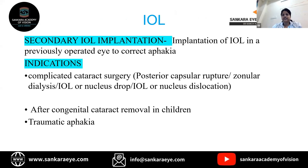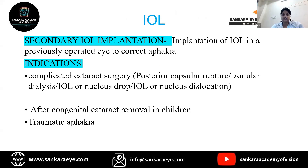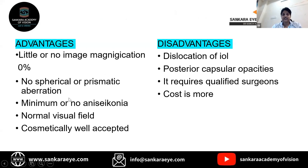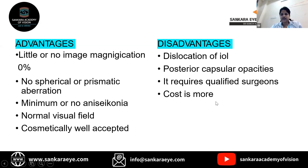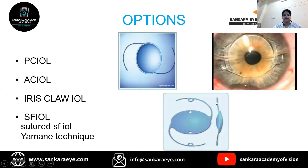Secondary IOL implantation is the implantation of an IOL in a previously operated eye to correct aphakia. Indications include complicated cataract surgery, congenital cataract removal in children, and traumatic aphakia. Advantages include little or no image magnification, no spherical or prismatic aberration, minimum or no aniseikonia, normal visual field, and cosmetically well accepted. Disadvantages include risk of dislocation, posterior capsular opacification, requires a qualified surgeon, and higher cost.